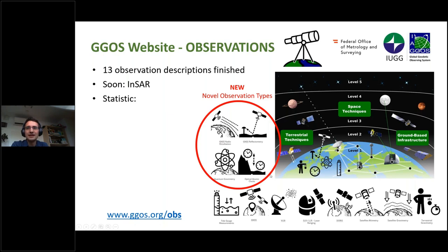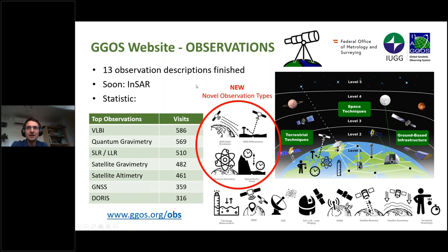With the INSA description, this part will be finished. I also have a little statistic about it, but the whole observation pages have been published only for a few months, so the visitor count is not as high as for the product descriptions. You can see here that, for example, VLBI has the most visitors, then quantum gravimetry, SLR, satellite gravimetry, and so on. So quite a lot of people have visited these descriptions.